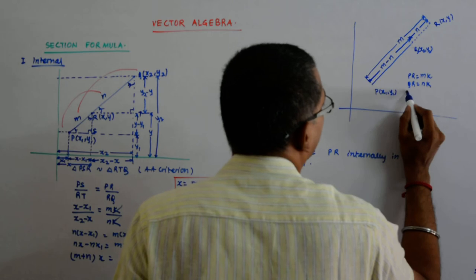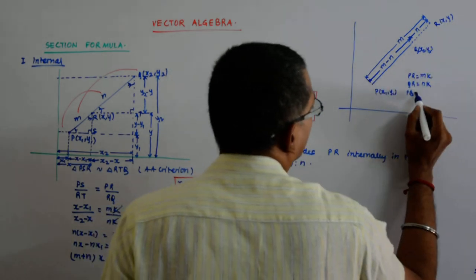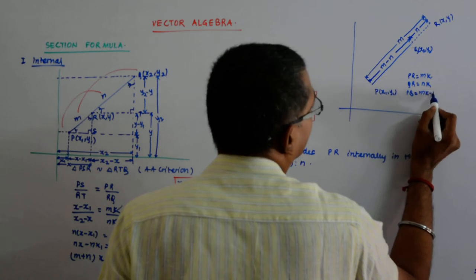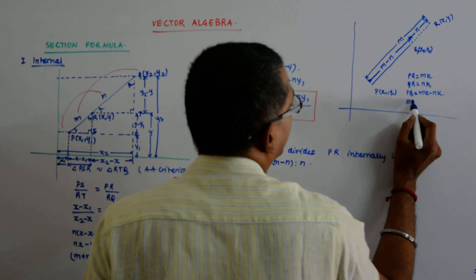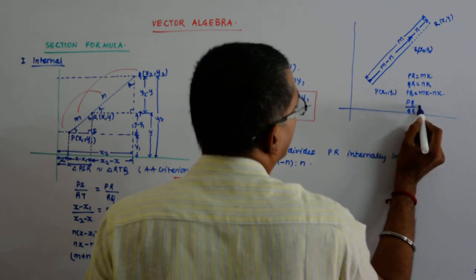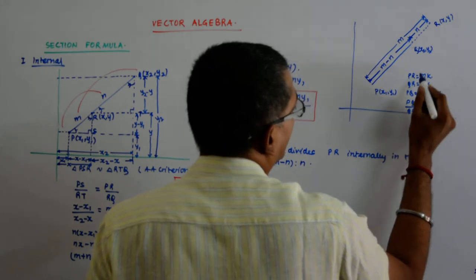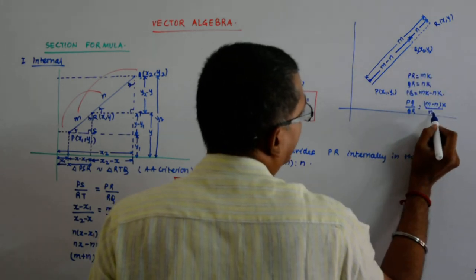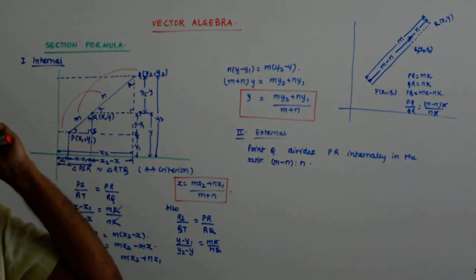So, what is the length of p q? It is p r minus q r. So, m k minus n k. Now, you take the ratio p q upon q r that will be m minus n k upon n k. So, that is why I have written m minus n is to n. We get the point?